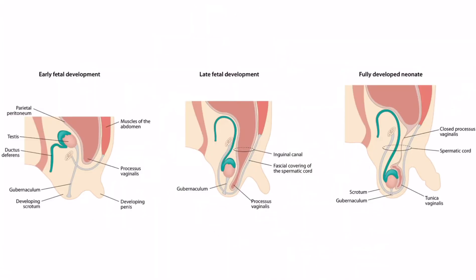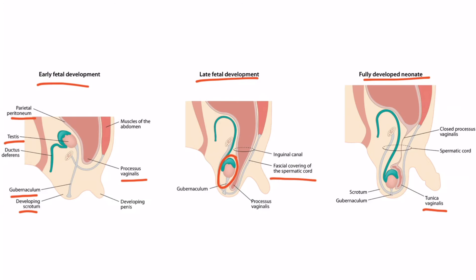Here we have a lateral view of the gonads descending from the abdomen into the scrotum. During early fetal development, the processus vaginalis and testes are up in the abdomen. The processus vaginalis is just an outpouching of the parietal peritoneum. Later in fetal development, the gubernaculum shortens and brings the testes toward the scrotum, along with the fascial covering of the spermatic cord, which is an extension of the muscles of the abdomen. In a fully developed neonate, the processus vaginalis closes, and the tissue remaining in the scrotum is known as the tunica vaginalis, surrounding a central cavitary region filled with serous fluid. In females, the ovaries descend only slightly and the processus vaginalis completely obliterates.